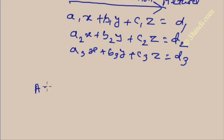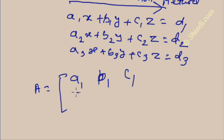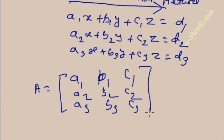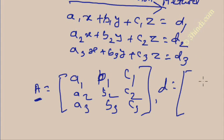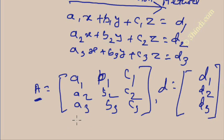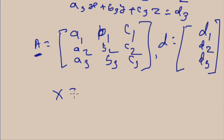The first step in the matrix inversion method is to form three matrices. Matrix A is the coefficient matrix for the variables: a1 b1 c1 / a2 b2 c2 / a3 b3 c3. Matrix D contains the constants d1, d2, d3. The third matrix X contains the variables x, y, and z.